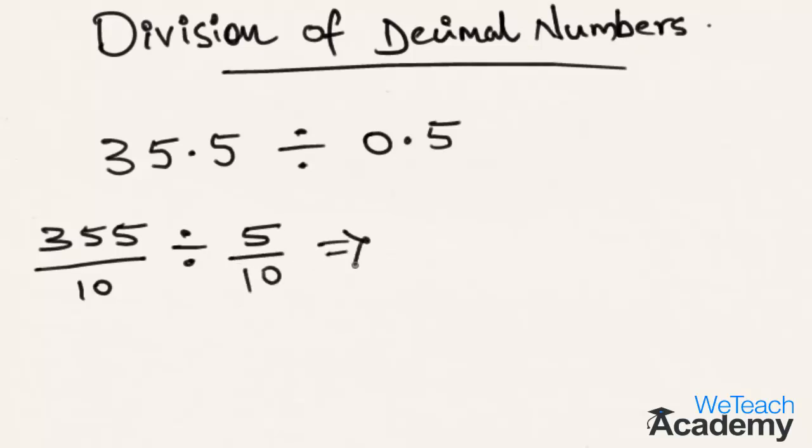Now multiplying the fraction with the reciprocal of the other fraction, that is, 5 by 10 becomes 10 by 5. Now let us see if this can be simplified. Yes, 10 and 10 gets cancelled out.